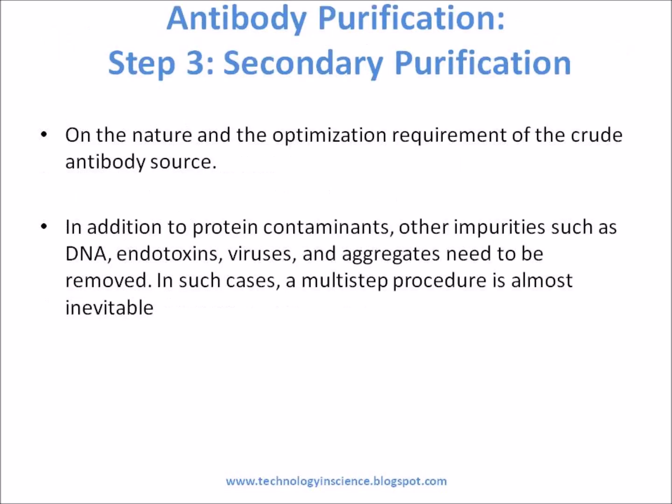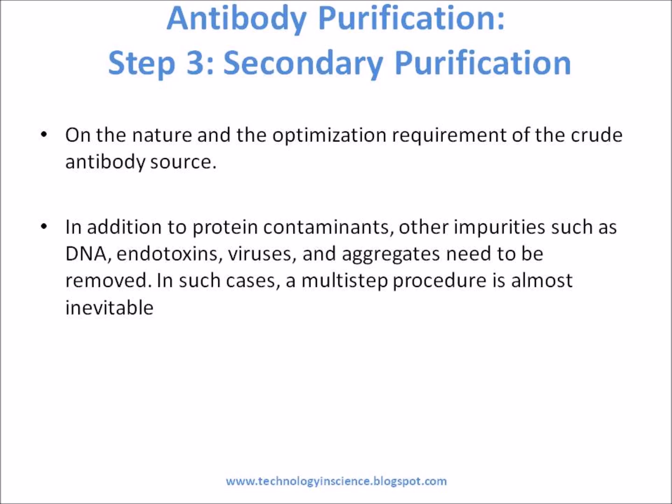Step 3: Secondary Purification. The secondary purification step is selected based on the nature and the optimization requirement of the crude antibody source. The initial capture step can often give purities in the range of 80 to 95 percent. However, for higher purity grades in excess of 99 percent, secondary purification is required. In addition to protein contaminants, other impurities such as DNA, endotoxins, viruses, and aggregates need to be removed. In such cases, a multi-step procedure is almost inevitable.